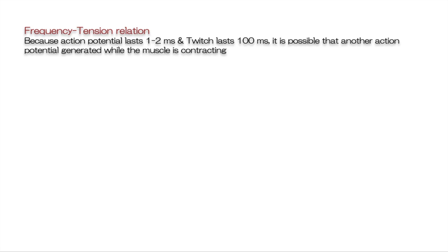The frequency-tension relation: the duration of the action potential in a skeletal muscle fiber is about 1 to 2 or up to 5 milliseconds, but the twitch itself lasts about 100 to 150 milliseconds. For this reason, the muscle fiber can be activated again long before the muscle has relaxed.